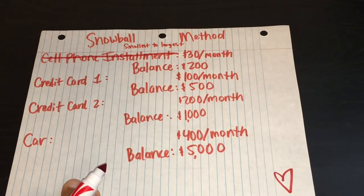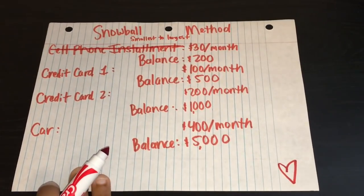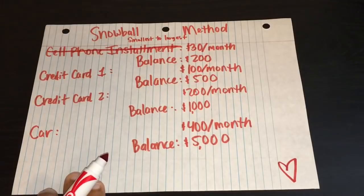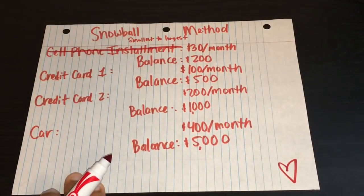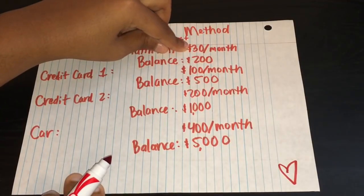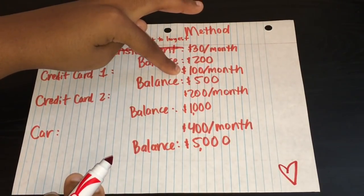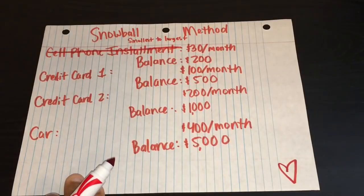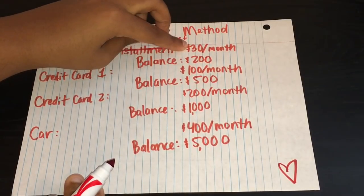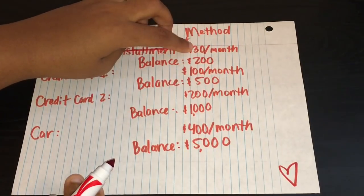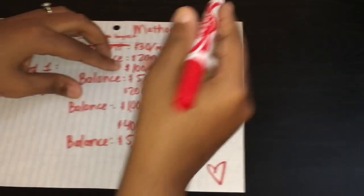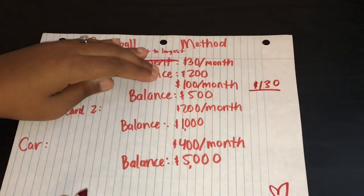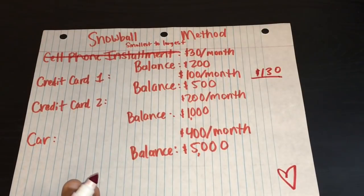So now, in addition to the other money that you are finding within your budget, you are able to put at least $130 towards credit card one. Because you are taking that $30 and rolling it into the credit card one minimum payment, putting at least $130 towards that debt every single month. Again, it all depends on what you're willing to sacrifice in order to pay it off quickly. But at the least, once you finish paying off the cell phone plan, you have at least $30 that you can put towards credit card one, so essentially you would be putting at least $130 a month.